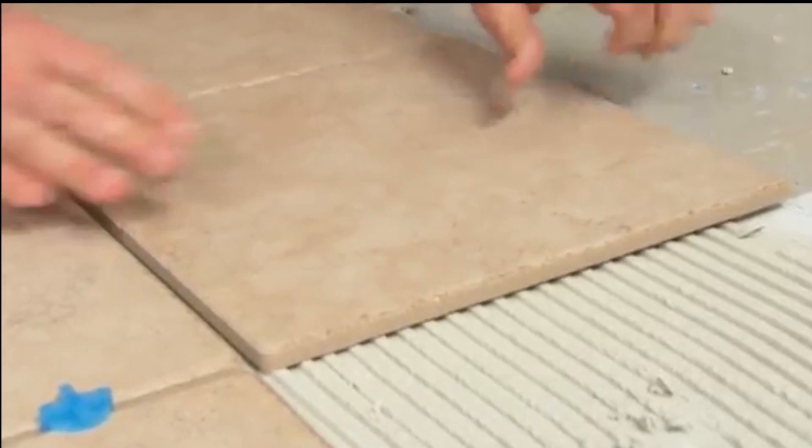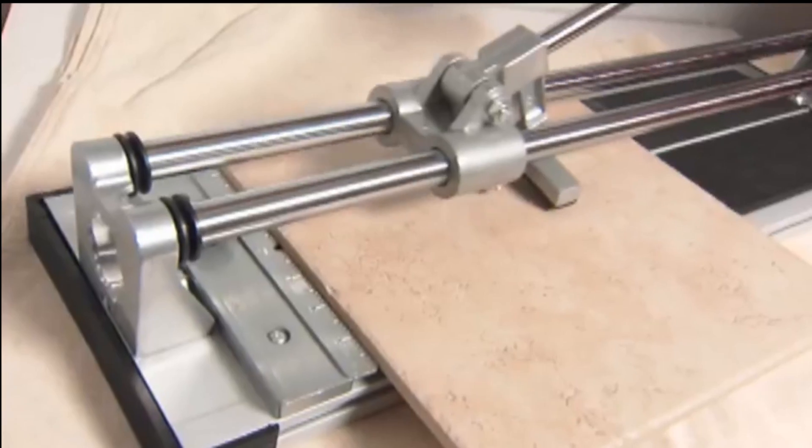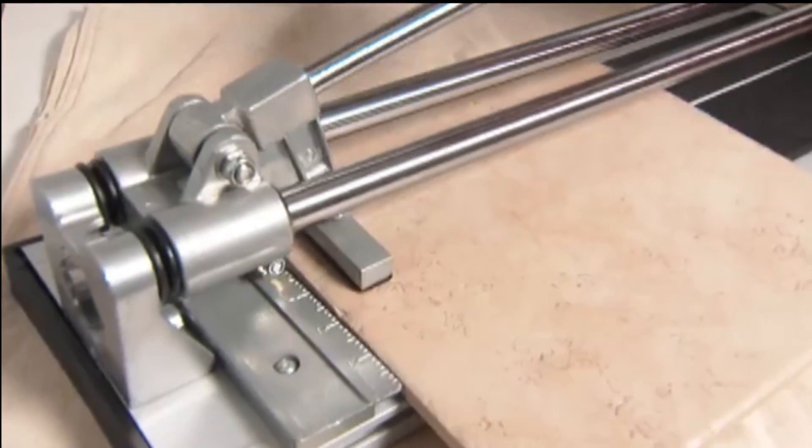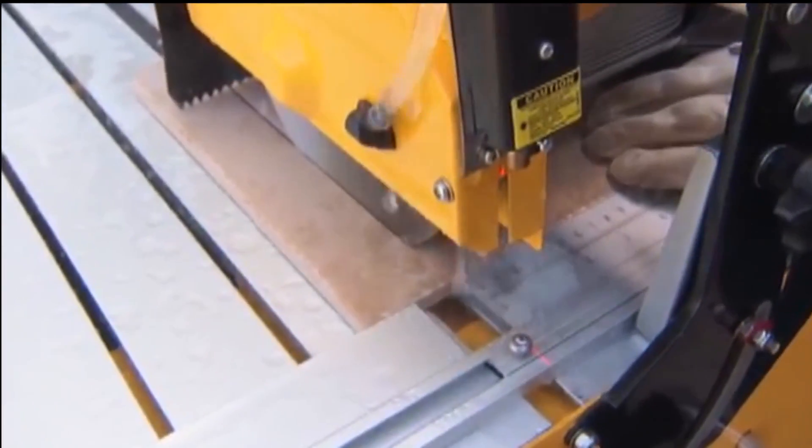Continue laying the tile in three-foot sections. We're going to have to cut the tile along the cabinets and walls. For small, straight cuts, you can use a tile cutter. But for this larger job, a tile saw is easier and faster.